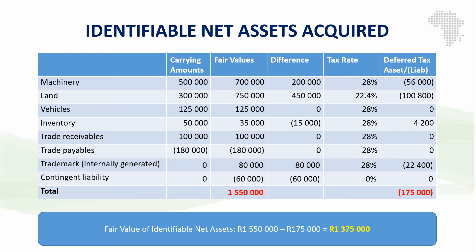From the additional information, there is an internally generated trademark that must be recognized. Its carrying amount in the books of the subsidiary is zero; however, from a group perspective we bring it in at $80,000, creating a difference of $80,000, and we account for deferred tax at 28%, which is $22,400. We also have the contingent liability that must be brought in at $60,000; however, there are no tax deductions on this, so there are no deferred tax implications. The end result is that the fair value of our net assets is $1,550,000, less the deferred tax implications of the revaluations, giving us a net identifiable asset value of $1,375,000 at the date of acquisition.